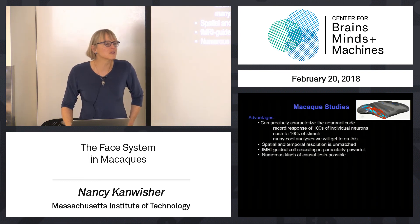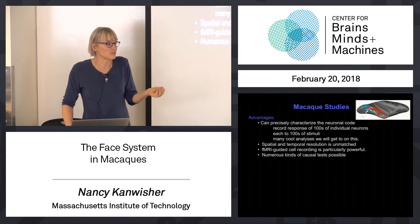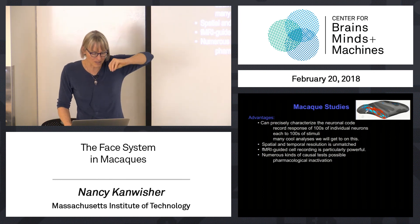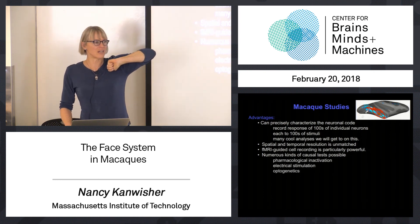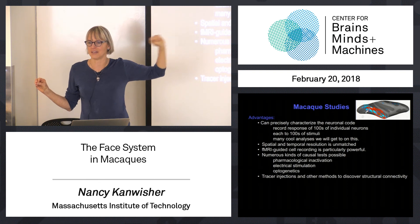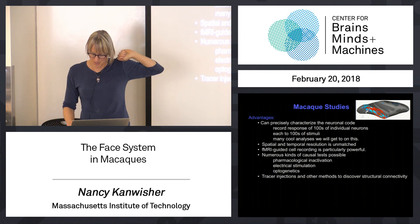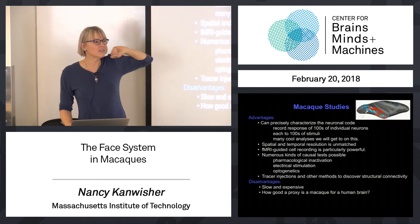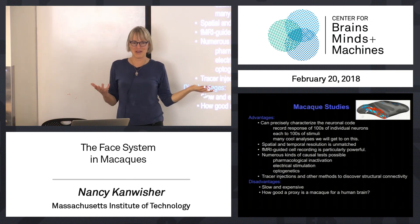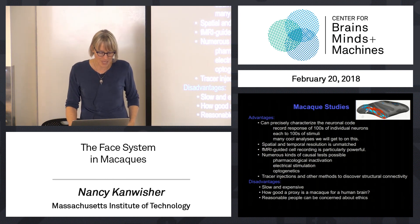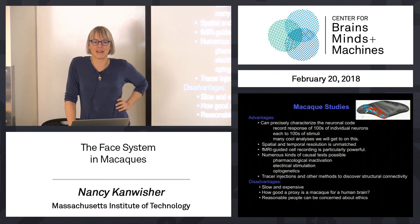Of course, there are numerous kinds of causal tests you can do in a monkey — from electrical stimulation, much as neurosurgeons sometimes do in humans, to dripping drugs on a location, optogenetics, and all kinds of other methods. You can also discover the actual structural connectivity of that brain region to other parts of the brain, something totally cool for which methods in humans are lousy. Disadvantages: it's slow and expensive. And there is the question — it's a monkey; we want to know how human vision works. There are things you can do about that, and reasonable people can be concerned about the ethics.